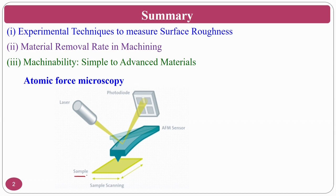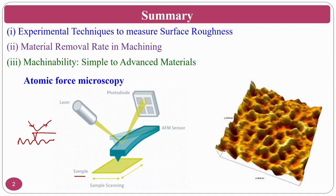You have a sample, and there is an AFM sensor — a cantilever beam. If the surface roughness is like this, the cantilever beam moves on the surface. A laser light falls on it, and a photodiode receiver receives the reflected signal. Based on this principle, ups, downs, valleys, and peaks can all be measured in three dimensions, giving a good quality 3D picture.